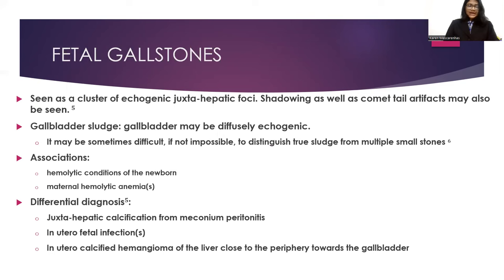Fetal gallstones are seen as a cluster of echogenic juxtahepatic foci. Shadowing as well as comet tail artifacts may also be seen. Gallbladder sludge: the gallbladder may be diffusely echogenic, and it is difficult to distinguish true sludge from multiple small stones. Associations include hemolytic conditions of the newborn and maternal hemolytic anemia. Differential diagnoses are juxtahepatic calcification from meconium peritonitis, in utero fetal infections, and in utero calcified hemangioma of the liver close to the periphery towards the gallbladder.